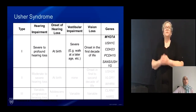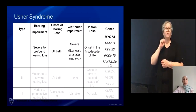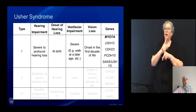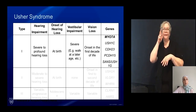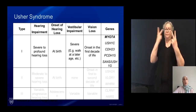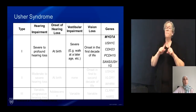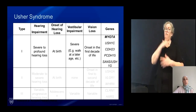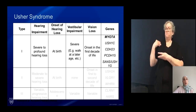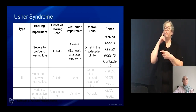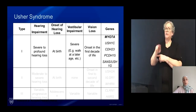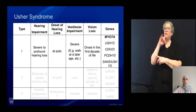We know that Usher syndrome is characterized into three types based on hearing, vestibular, and vision impairments. However, my talk will focus on type 1 and specifically pathogenic variants in myosin 7a, which account for a majority of Usher syndrome type 1 cases.